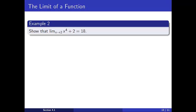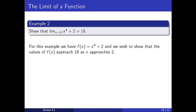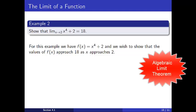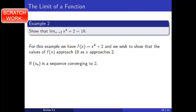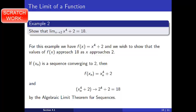For the next example, we will show that the limit as x approaches 2 of x to the 4th plus 2 is 18. To do this, we need to show that the values of f of x approach 18 as x approaches 2. For this example, we will not use the definition of a convergent sequence as in the previous example. We will instead use the algebraic limit theorem for sequences, which is one of my favorites. If x sub n is a sequence converging to 2, then f of x sub n is equal to x sub n to the 4th plus 2, and the sequence x sub n to the 4th plus 2 converges to 2 to the 4th plus 2, which is 18 by the algebraic limit theorem.